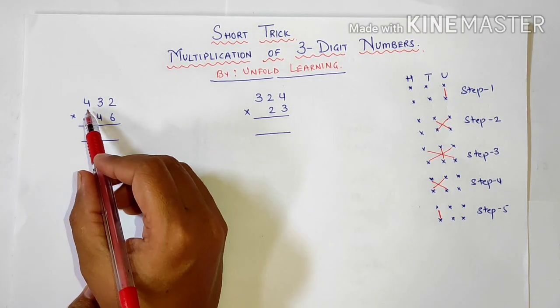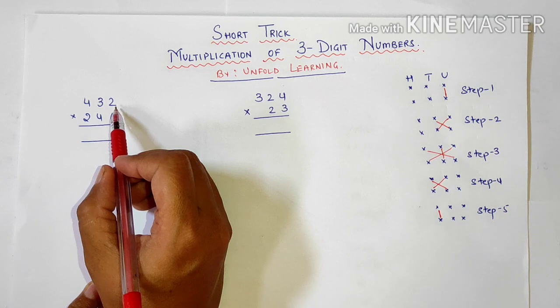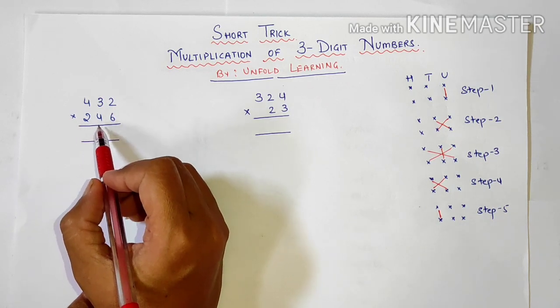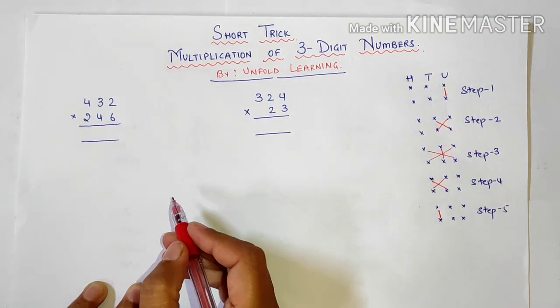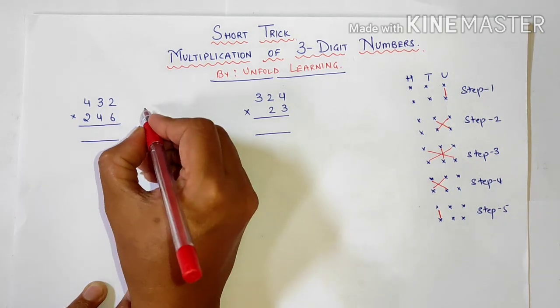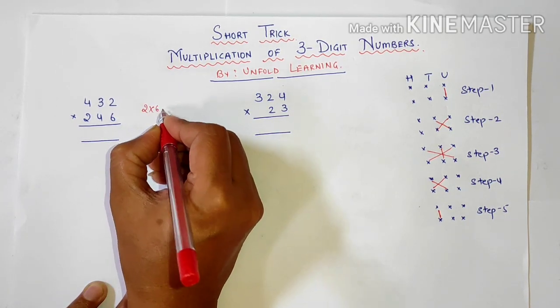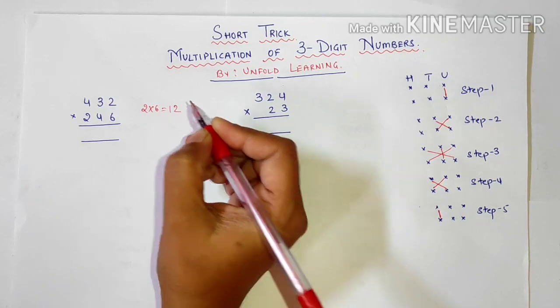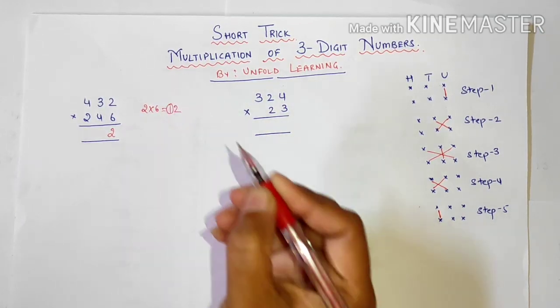So first of all we have a number here 432 multiplied by 246. So the first step we will follow that is for units place 2 into 6. So 2 into 6 is 12. So I have here 2 written. We will leave 1 to carry over.